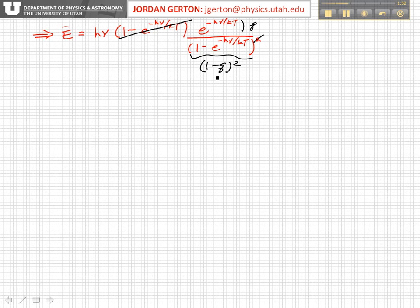And then that gives us h nu times e to the minus h nu over kT divided by 1 minus e to the minus h nu over kT.